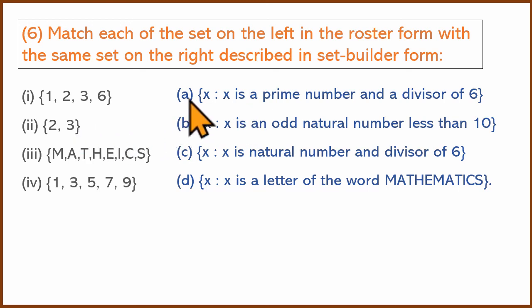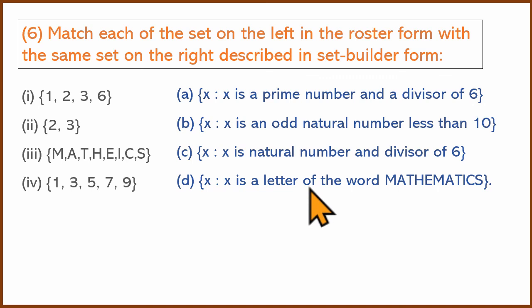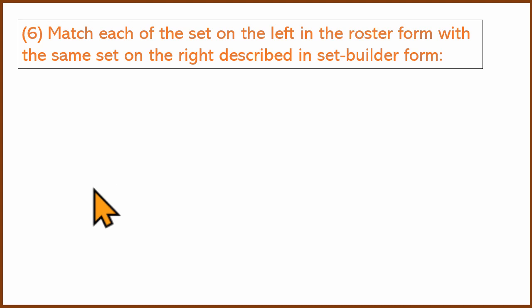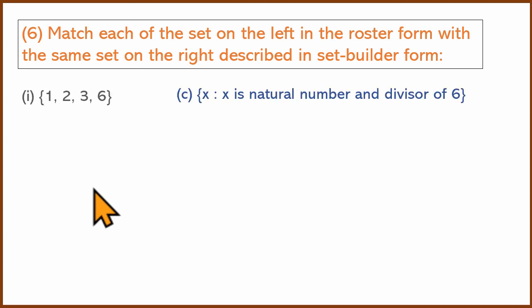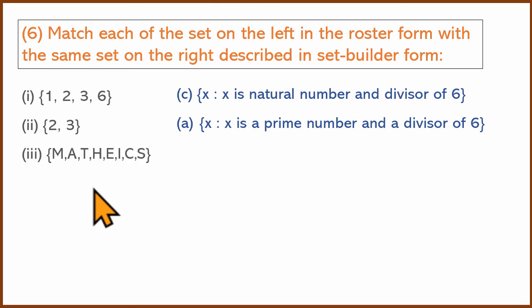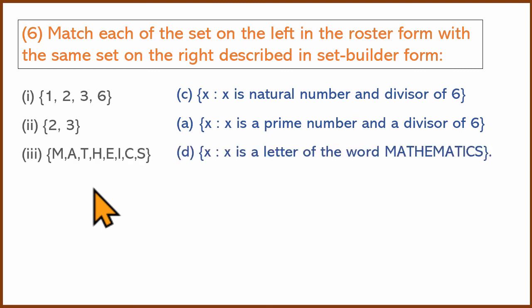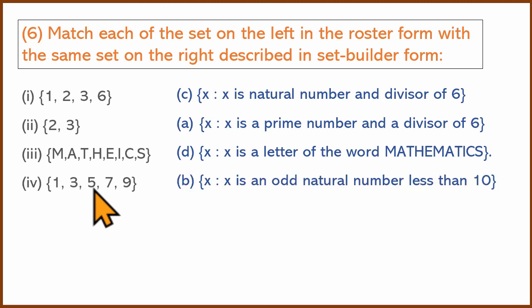X is a natural number and divisor of 6: {1, 2, 3, 6}. 2 is a prime number and divisor of 6 — correct, matching answer A. 3 is a letter of the word MATHEMATICS — no repetition, matching answer D. 4 is odd natural number less than 10: {1, 3, 5, 7, 9}. Last: natural number divisors of 6 are {1, 2, 3, 6}. Thank you.